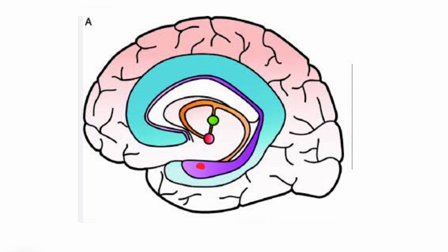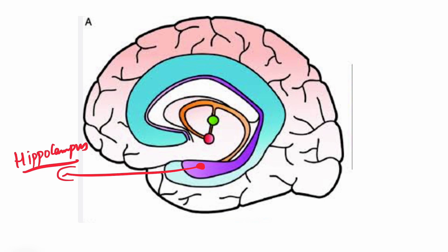Please see the structures which constitute this Papez circuit. First is the hippocampus. It will start from the hippocampus and again end in the hippocampus. From the hippocampus, the axons will travel in a bundle — this structure is called the fornix, which I am highlighting right now with red color. This bundle of axon fibers is called the fornix.